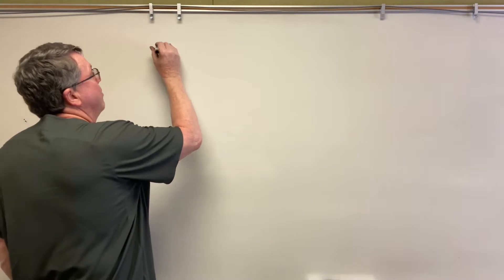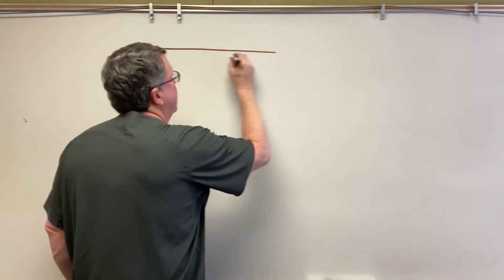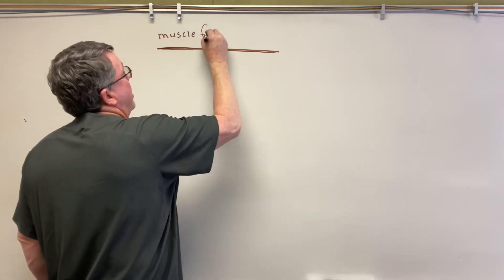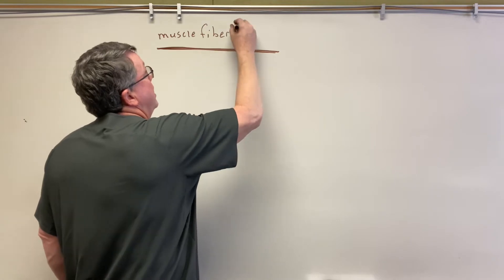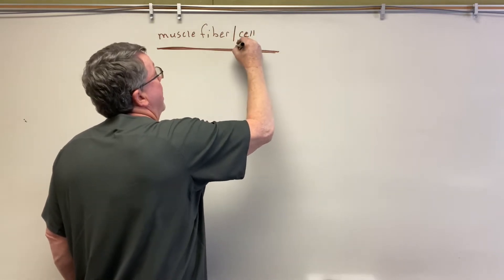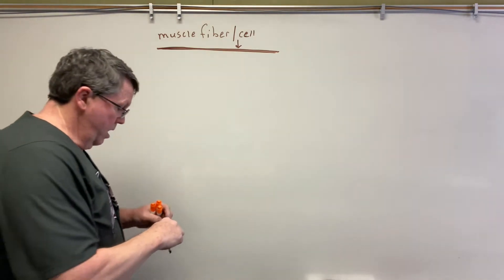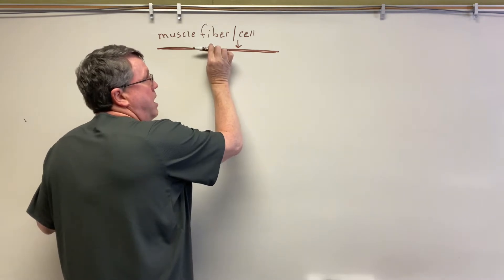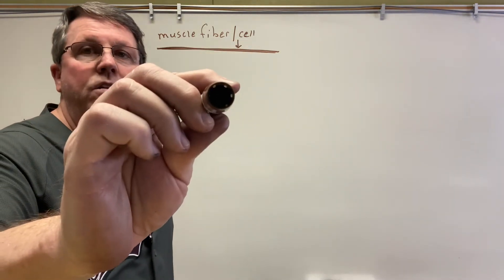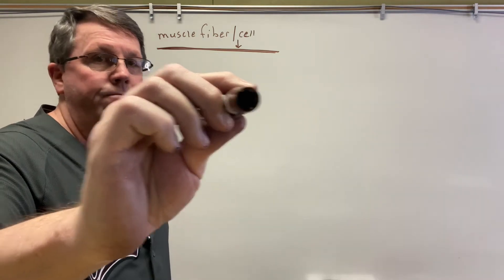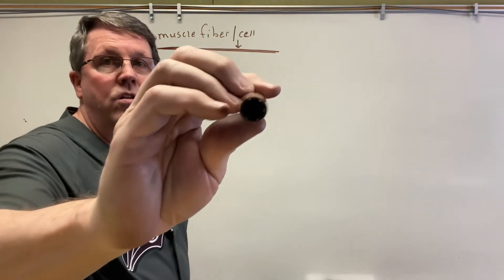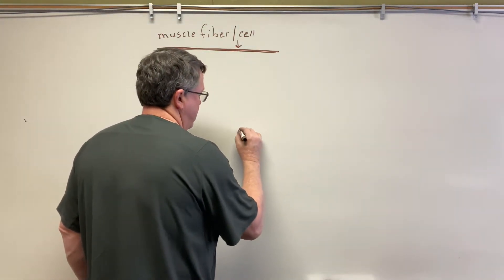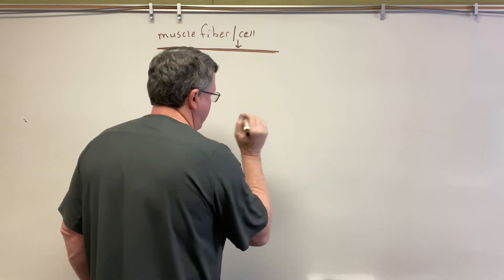Let's go ahead and get started. The first thing I'm going to show you is a muscle fiber. So what exactly are we talking about when we talk about gross anatomy? This is a muscle fiber — it's also known as a muscle cell.